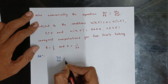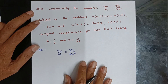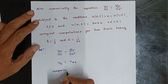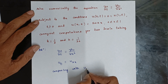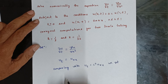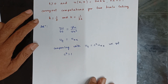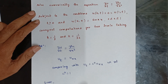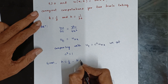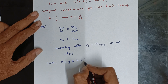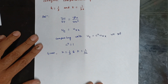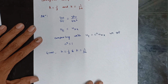The equation is ∂u/∂t = ∂²u/∂x², which is u_t = c² · u_xx. We get c² = 1. Given data: h = 1/3 and k = 1/36. We compute r = k/h² to apply the Schmidt explicit formula.